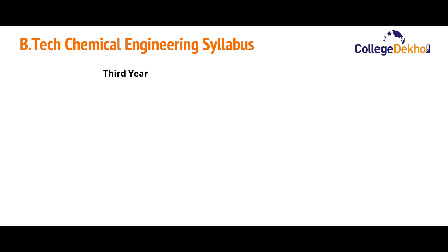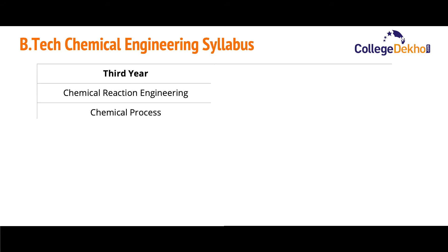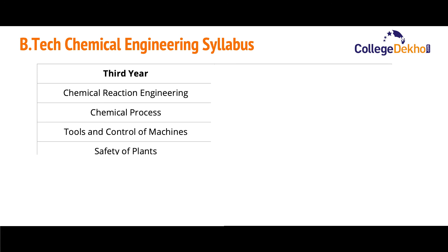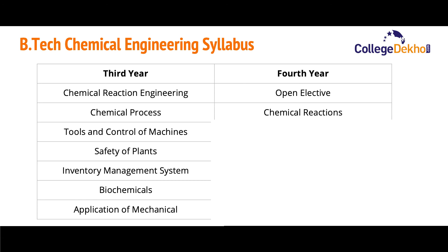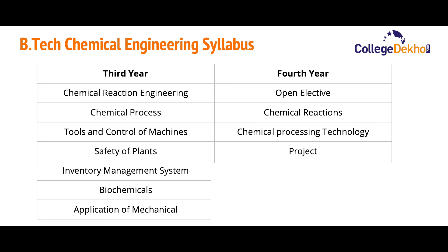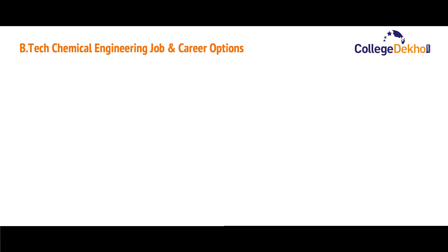The third year syllabus includes chemical reaction engineering, chemical process tools and control of machines, safety of plants, inventory management systems, biochemicals, and applications of mechanical engineering. The fourth year consists of open elective subjects, chemical reactions, chemical processing technology, a project, and finally an internship.